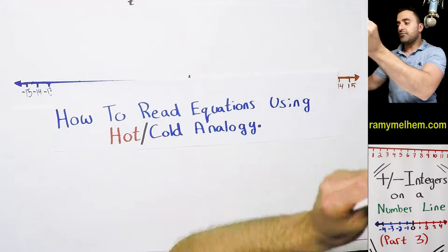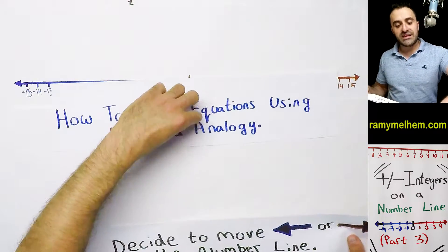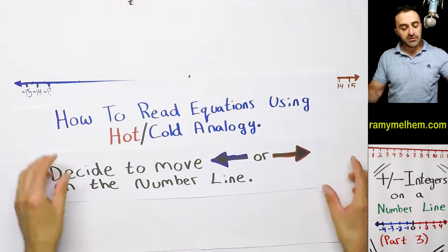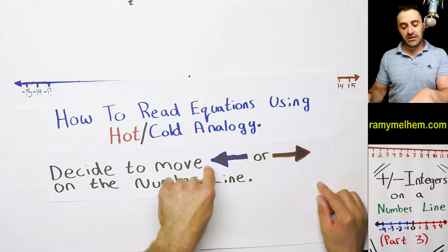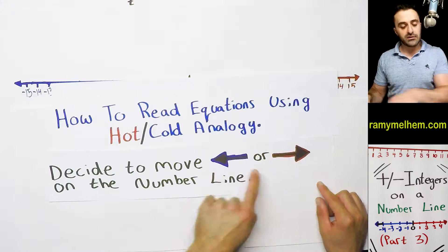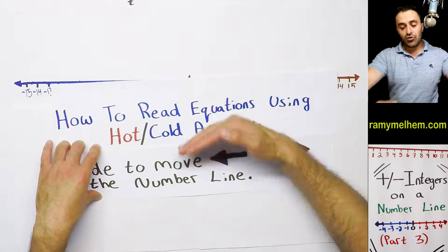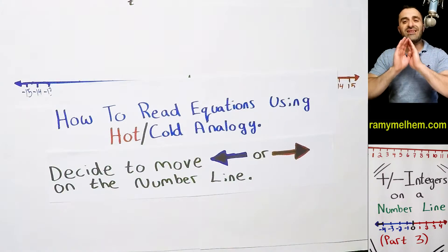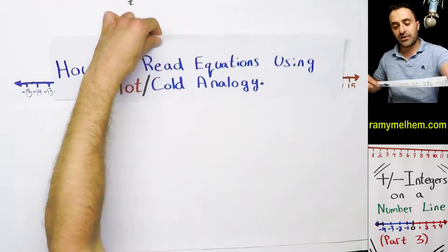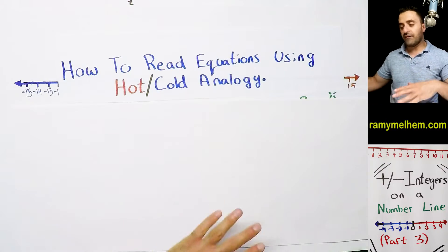The second thing that you've got to do is use this information to decide if we need to move left or right on the number line or the thermometer. If you can understand these two things, this lesson is a cinch. So let's start with this one here. This is going to be part of my review.